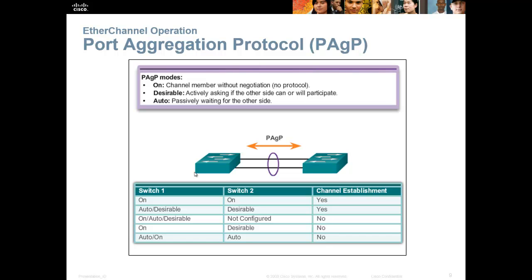Cisco provides EtherChannel in two different flavors. The first one is PAGP, or Port Aggregation Protocol. This is Cisco proprietary, meaning if you run this you have to have all Cisco switches. HP ProCurve and some other companies make very nice switches, and a lot of places — especially small to medium businesses — there's no real reason to buy Cisco because Cisco is enterprise level, made for big business and heavy duty stuff.